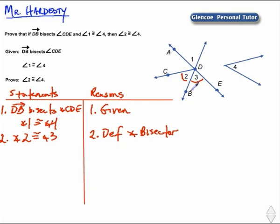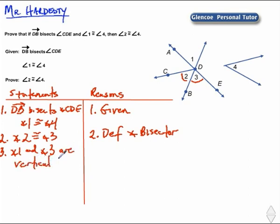Now let's analyze the picture. We also know the relationship between angles 1 and 3 because angles 1 and 3 are vertical angles. Let's state that in statement 3: angle 1 and angle 3 are vertical angles. We know that because of the definition of vertical angles — those are angles formed by two intersecting lines.